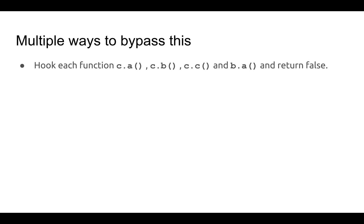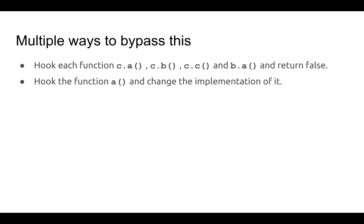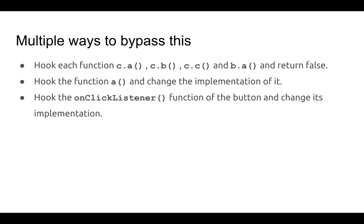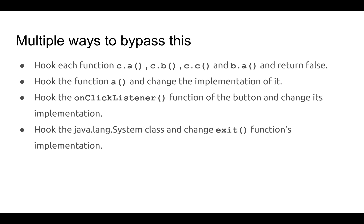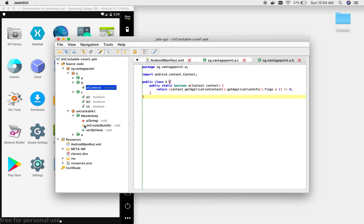Alternatively, you can hook function a in the main activity and change its implementation, or hook the onClick listener of the OK button in the alert dialog and change its implementation, or hook the system package and change the implementation of exit. For this video we are going to use the last one, which is the simplest of all four. Let's do it.